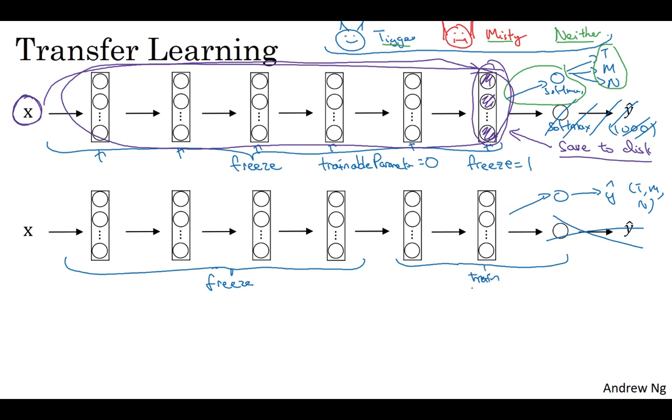And there are a couple ways to do this. You could take the last few layers' weights and just use that as initialization and do gradient descent from there. Or you could also blow away these last few layers and just use your own new hidden units and then your own final softmax output. So either of these methods could be worth trying. But maybe one pattern is if you have more data, the number of layers you freeze could be smaller, and then the number of layers you train on top could be greater.